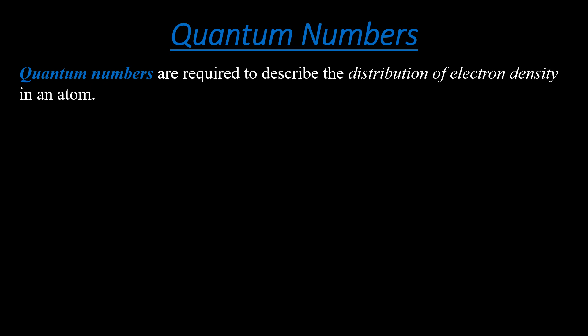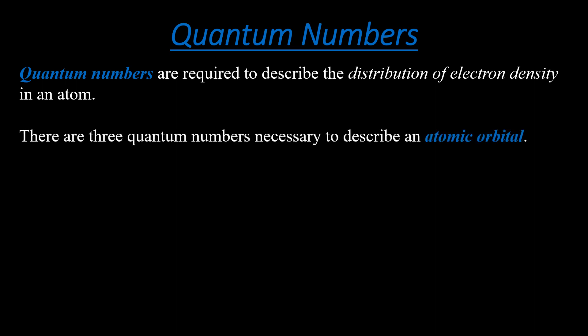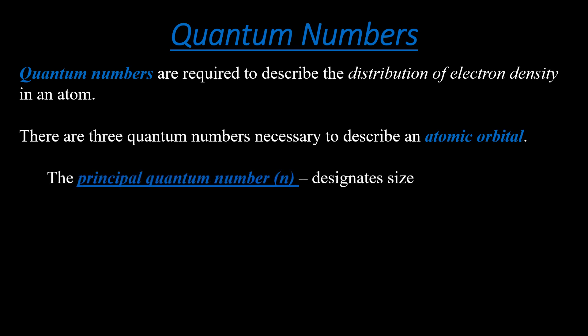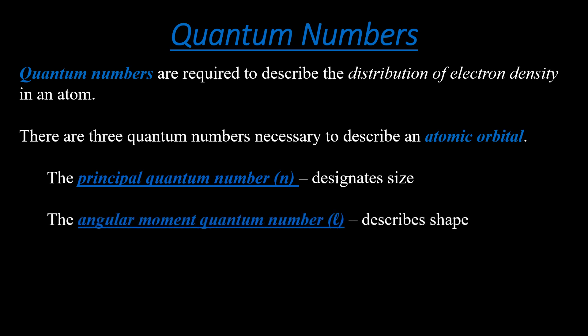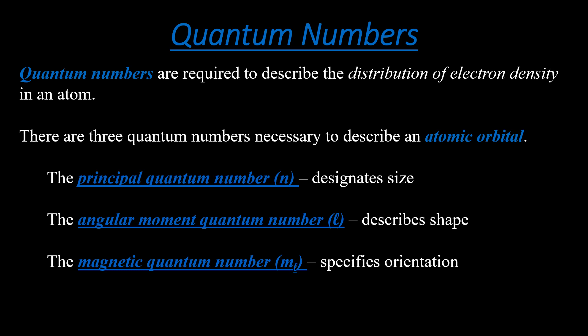Quantum numbers are required to describe the distribution of electron density in an atom — that means how to find out where the electron will be around the nucleus inside the atom using the quantum numbers. There are three quantum numbers necessary to describe an atomic orbital: the first one is the principal quantum number, the second one is the angular momentum quantum number, and the third one is the magnetic quantum number.